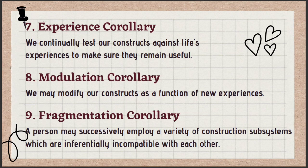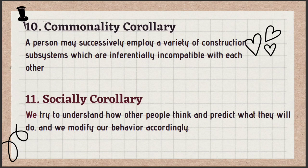The fragmentation corollary states that we can hold beliefs that contradict each other — for example, saying you love animals while eating steak or fried chicken. The commonality corollary states that many of our experiences are similar and shared, leading to similarity of constructs with others, though similar experiences do not necessarily mean the same construct. Lastly, the sociality corollary states that we try to understand how other people think and predict what they will do, modifying our behavior accordingly — our personal constructs can interact with others' personal constructs.